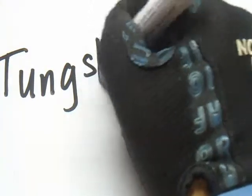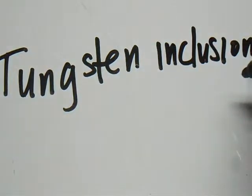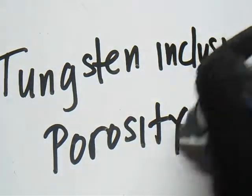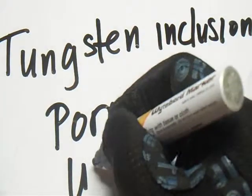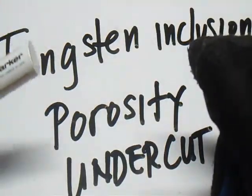Okay, so we have now 5 discontinuities covered. And there are other discontinuities — including Slag Inclusion, Porosity (Velocity), and also Undercut and Underfill.